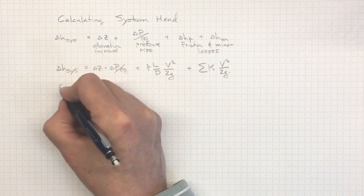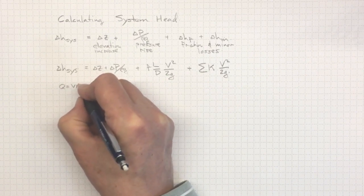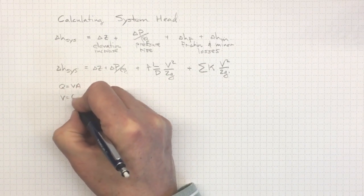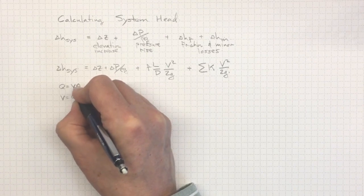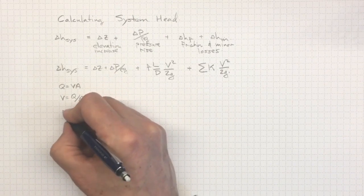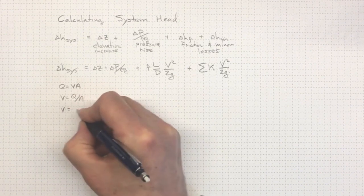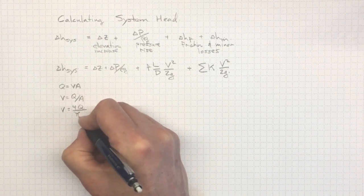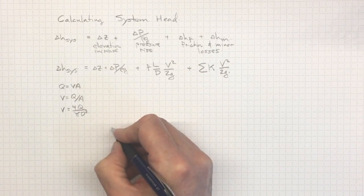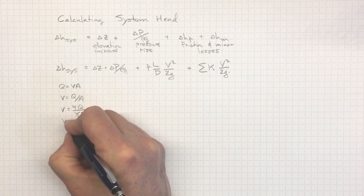Now remember, Q is equal to VA, so V is equal to Q over A, where A is the cross-sectional area and V is the velocity. So we can get that V is equal to 4 times Q over pi D squared.